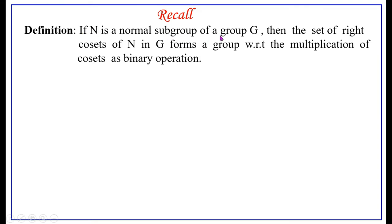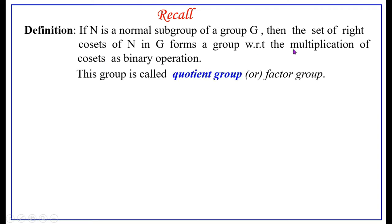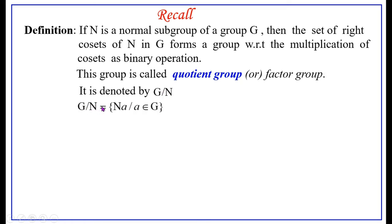Let us recall some results we have already learned. The first is the definition of a quotient group: if N is a normal subgroup of a group G, then the set of right cosets of N in G forms a group with respect to the multiplication of cosets as a binary operation. This group is called the quotient group or factor group, denoted G/N. So G/N equals the set of all elements of the form Na such that a belongs to G.